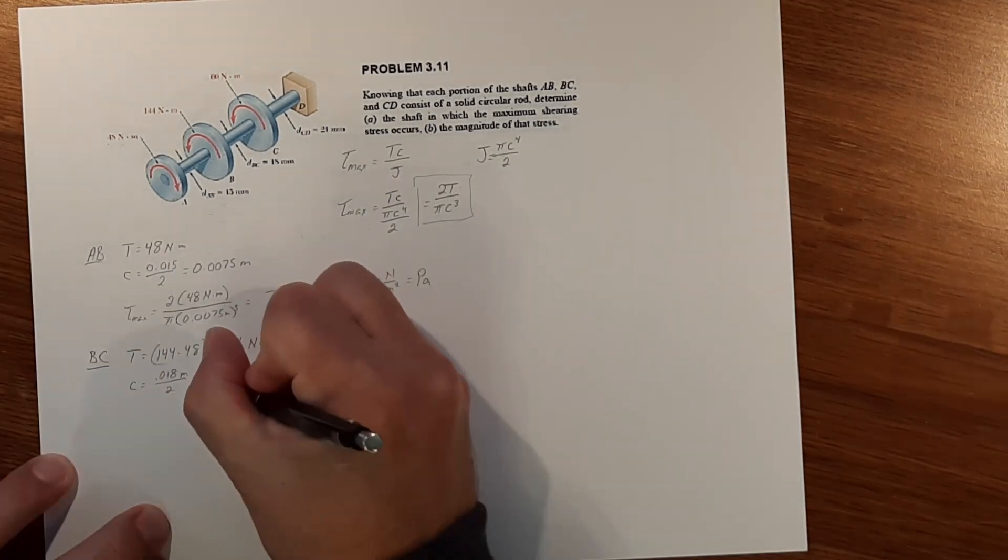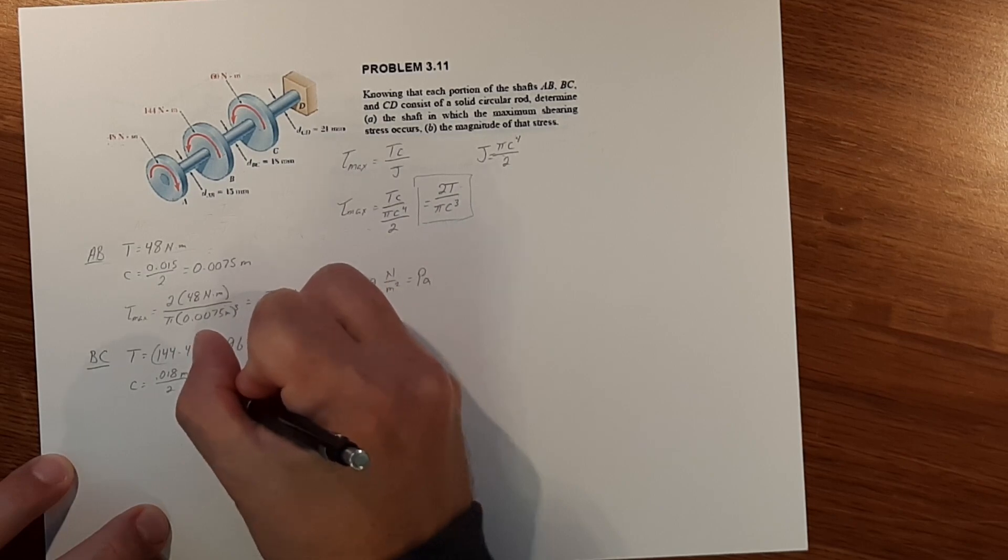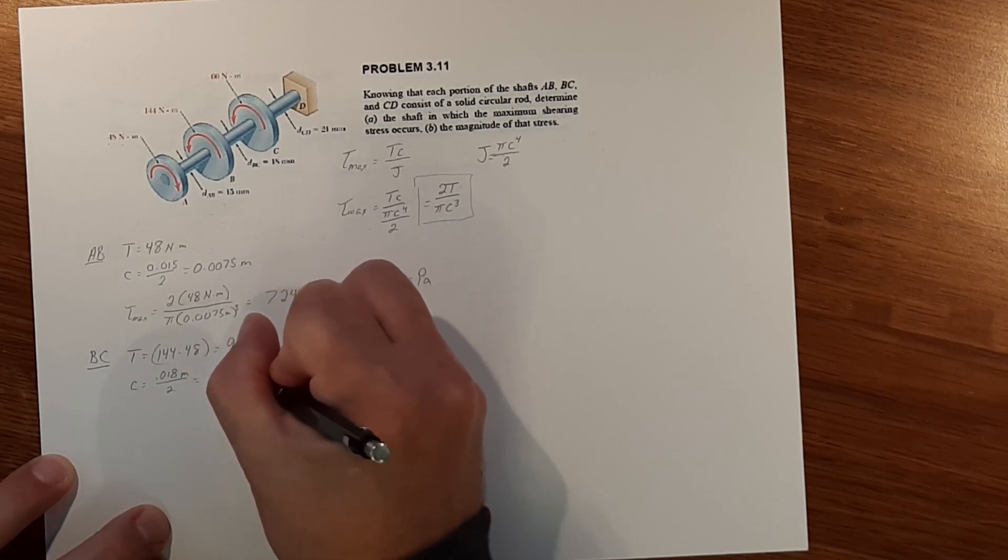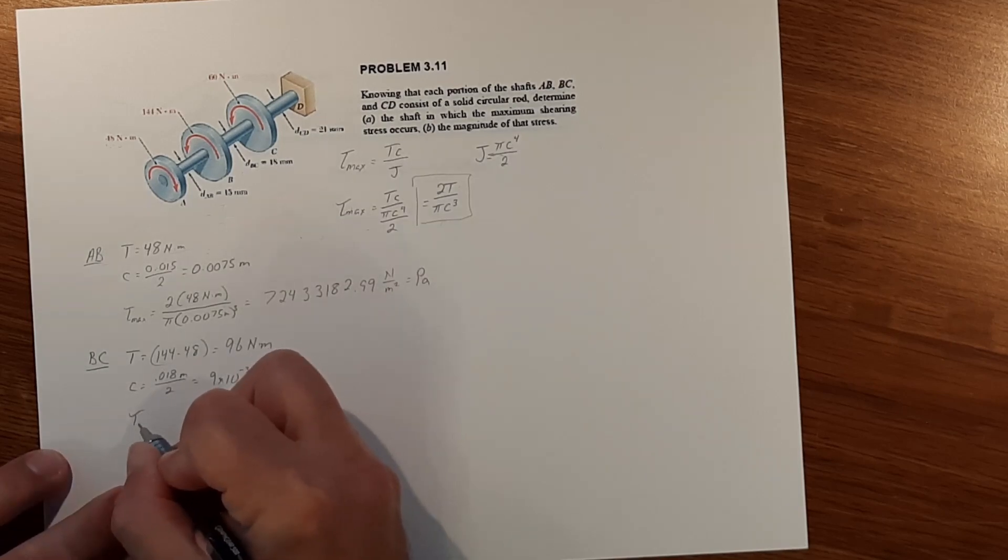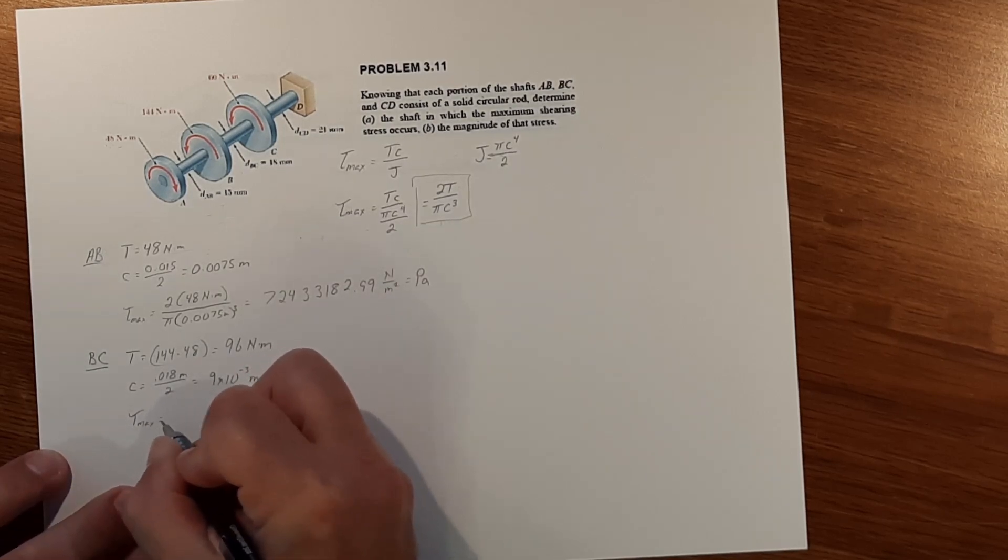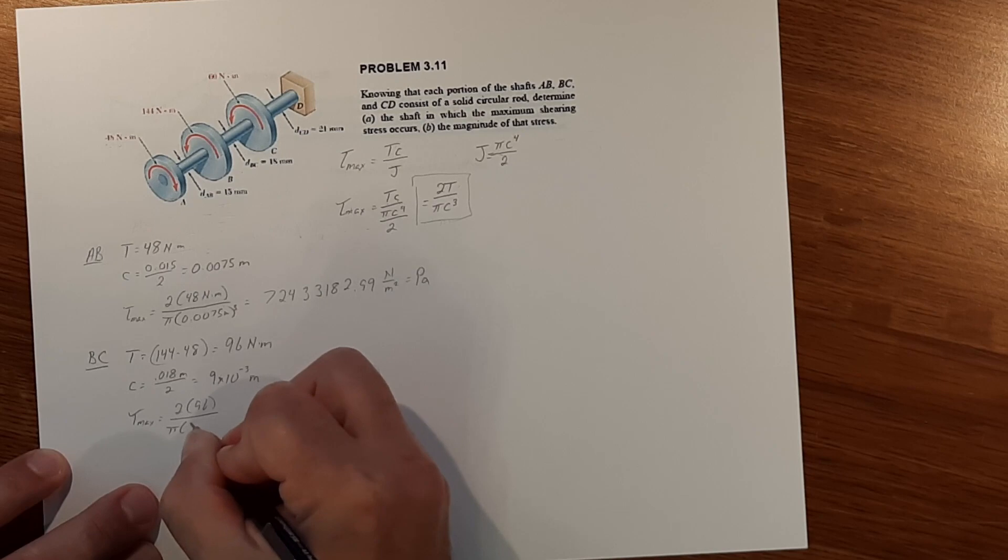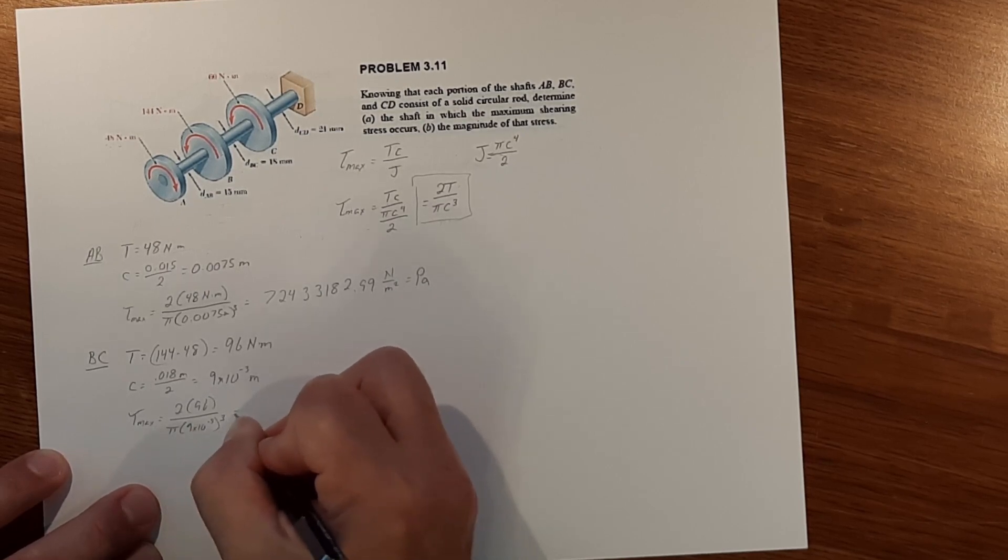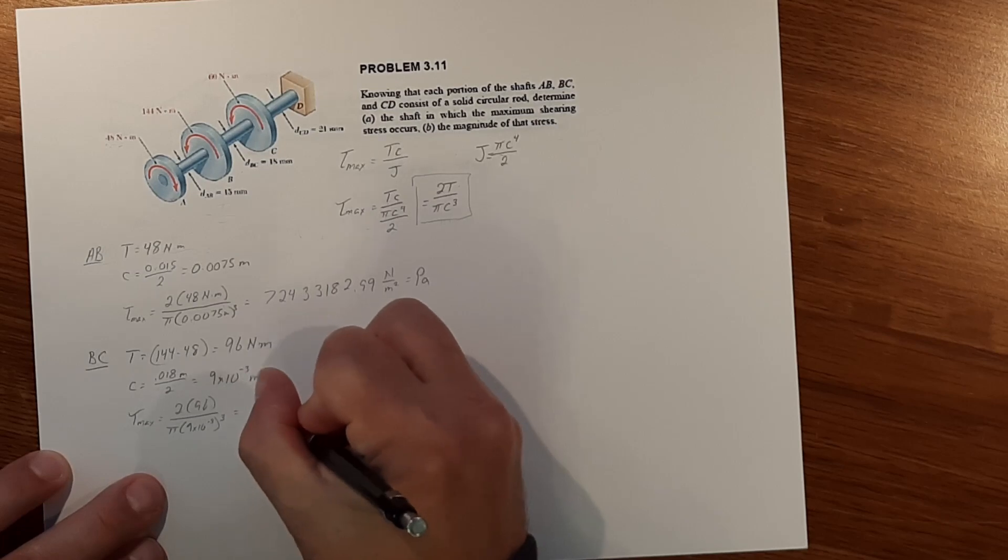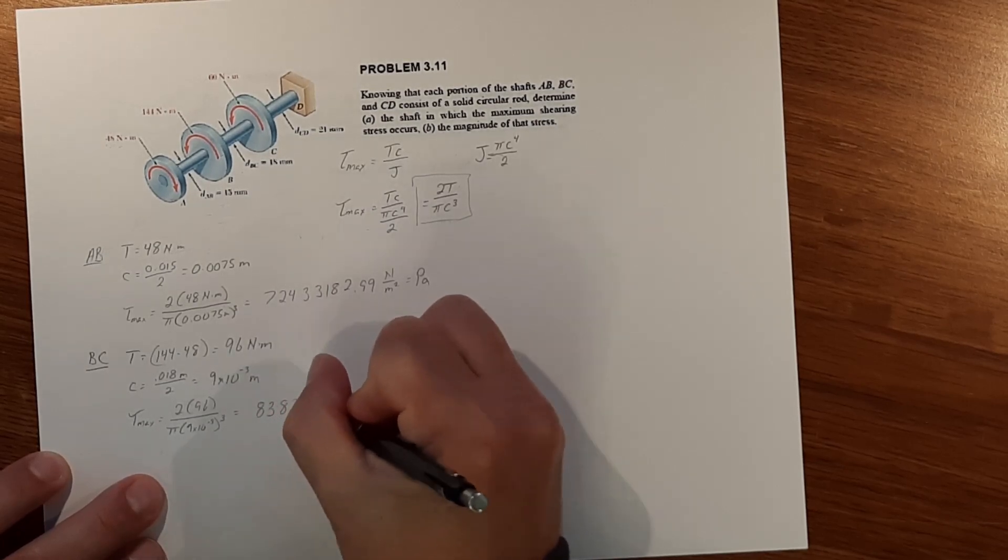So tau max is equal to 2 times 96 over pi 9 times 10 to the negative third cubed so we get 83834702.53 Newton meters squared which equals pascals.